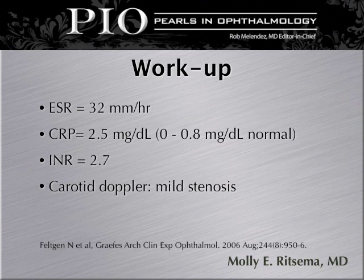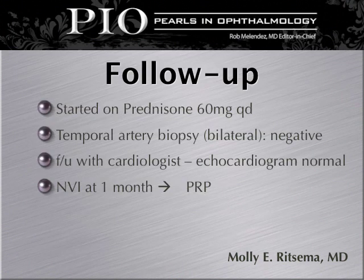The workup in this CRAO patient revealed a sed rate of 32, a CRP of 2.5 which was elevated, and an INR of 2.7. Carotid Doppler revealed mild stenosis bilaterally. On follow-up examination, the patient was started on prednisone 60 milligrams daily for the elevated CRP. Temporal artery biopsy was performed, which was bilateral and negative.